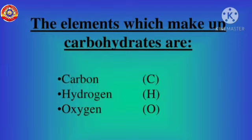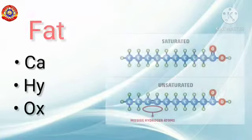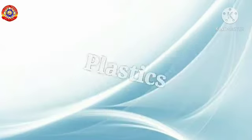Shall we examine the elements present in food materials? Carbohydrate is one of the sources of energy, containing the elements carbon, hydrogen, and oxygen. Protein, known as the body-building block, contains the elements carbon, hydrogen, oxygen, and nitrogen. Fat, another source of energy, contains carbon, hydrogen, and oxygen.